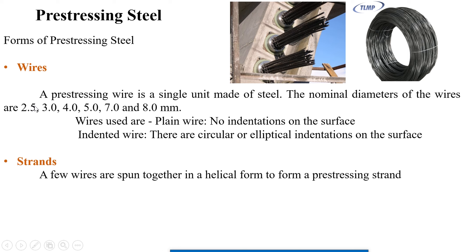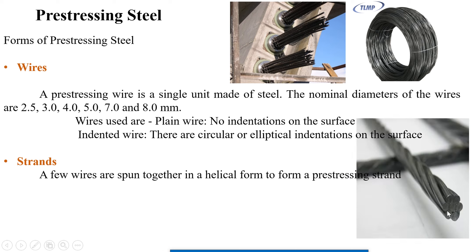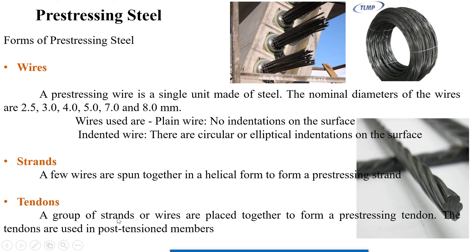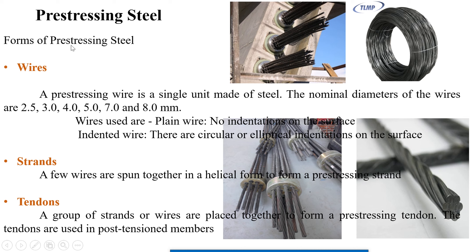Strands are the advanced version of wires: a few wires are spun together in a helical form to form a pre-stressing strand. Next, tendons: a group of strands or wires placed together form a pre-stressing tendon. Tendons are used in post-tensioned members. The whole arrangement of grouped wires or strands is called a tendon. Pre-stressing steel is used as wires, strands, or tendons depending on the type of member being made.